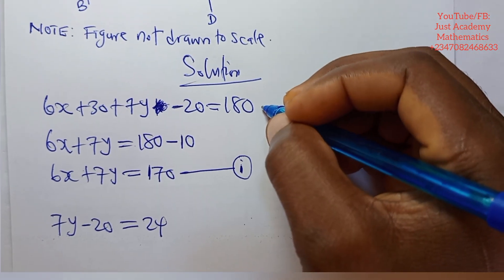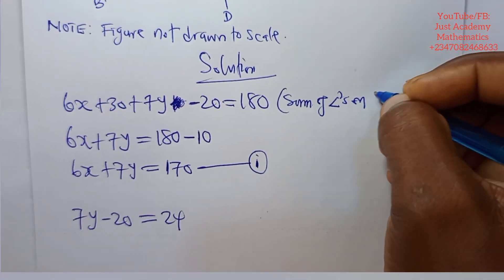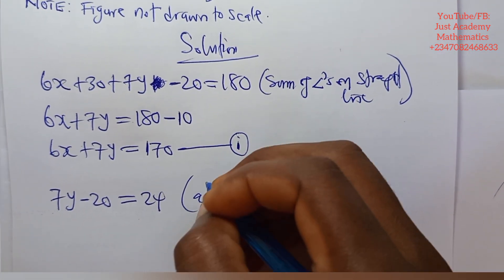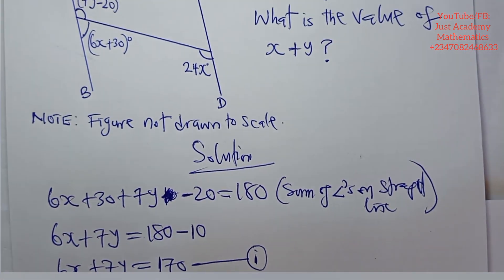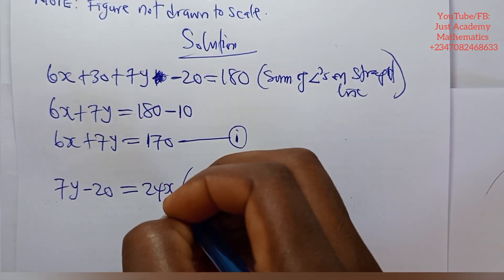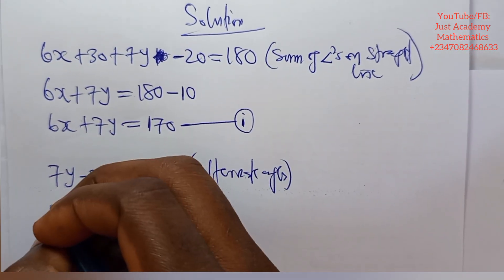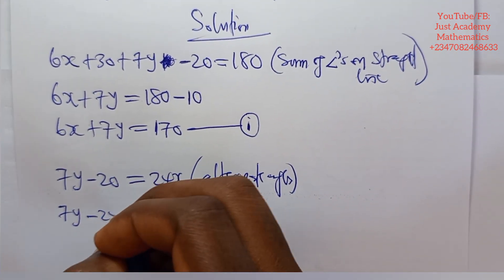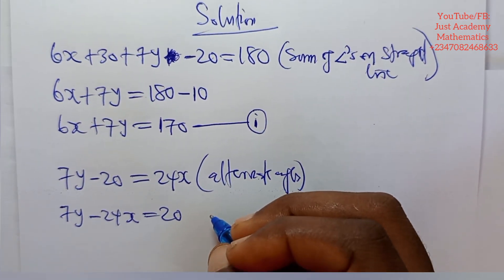So this is sum of angles on a straight line. That is the reason. This one is alternate angles. So let's advance. There is nothing to do there again. 24x, not 24. Okay, we can balance it up. We have that 7y minus 24x is equals to 20.